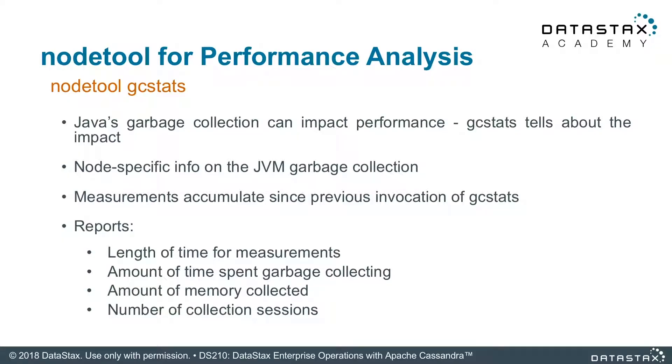Let's talk about some of the other functionality in NodeTool that can be useful not only in diagnosis if there's a problem, but just for general information. The first we're going to look at is GCStats. Not something you use all the time, but it is helpful if you think you're having some garbage collection issues — and this is Java garbage collection. GCStats gives you really in-depth information about what's happening in GC land.